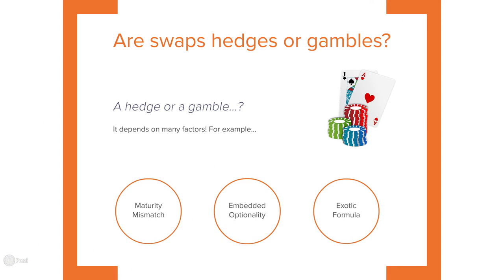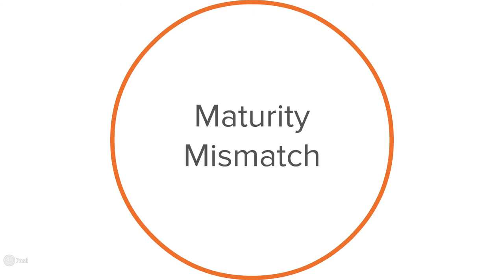As we have just seen, swaps are useful instruments that can be used to hedge or reduce risk. However, under certain circumstances they can transform themselves into gambles. For example, a maturity mismatch is when there is a gap between the maturity of the swap and that of the loan. After the maturity of the loan, the client would still have to make the agreed payments under the swap contract. From that point onward, the client is exposed to fluctuations in the LIBOR rate in a different way. If LIBOR is lower than 4% — the fixed rate payable to the bank — the client will pay more than it receives, so the client is at risk if interest rates fall.